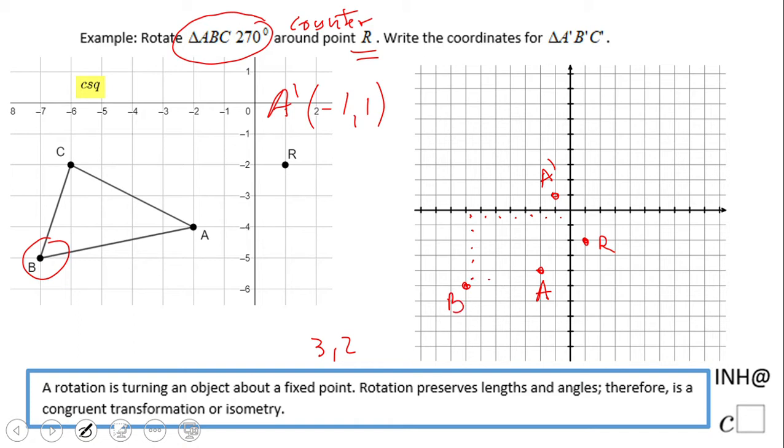I'm going to count how far away from R it is. One, two, three, four, five, six, seven, eight. One, two, three. Okay, so how am I going to count? Three left. One, two, three, four, five, six, seven, eight. This is point B prime.